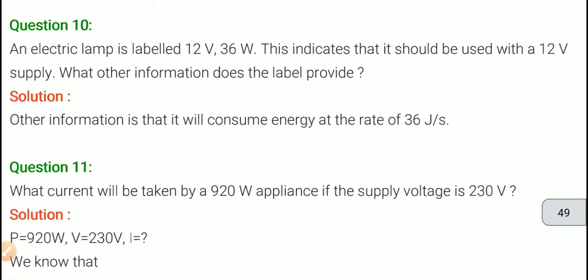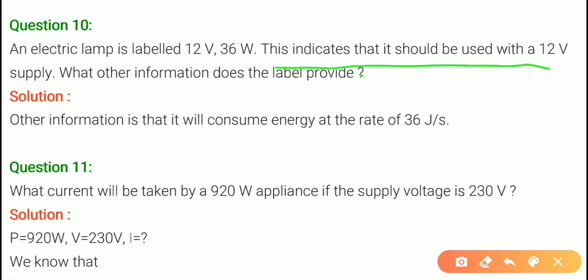Question number 10: an electric lamp is labeled 12 volt, 36 watt. This indicates it should be used with a 12 volt supply. The potential difference is 12 volt and power is 36 watt. The other information is that it will consume energy at the rate of 36 joules per second.